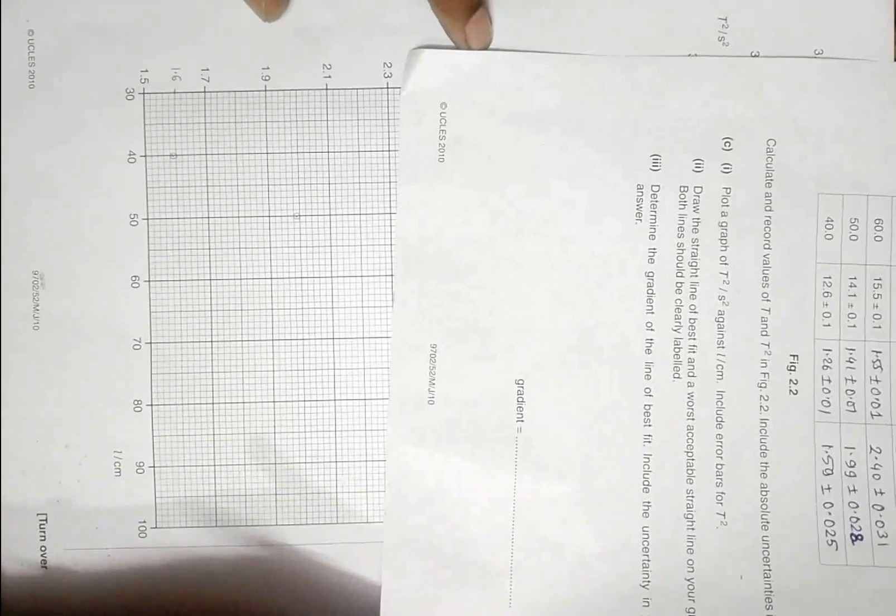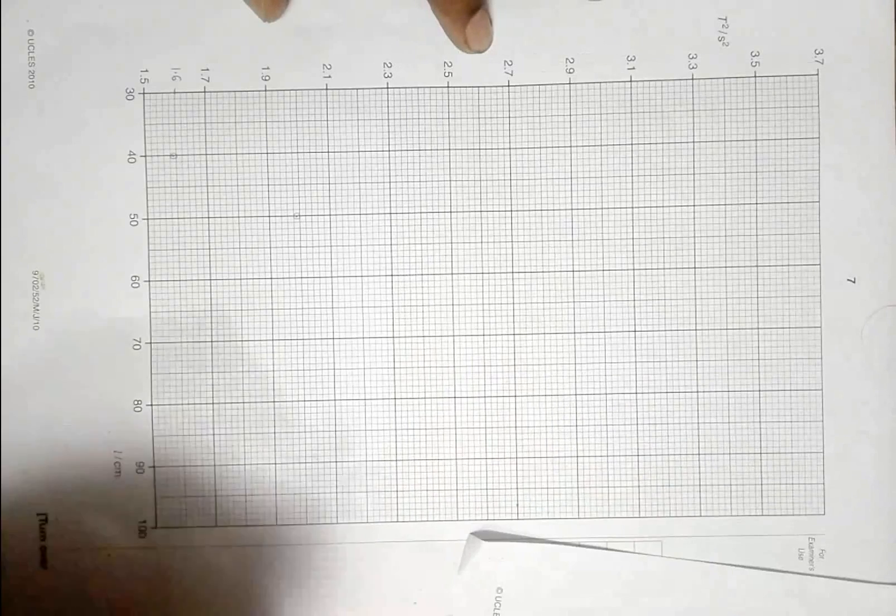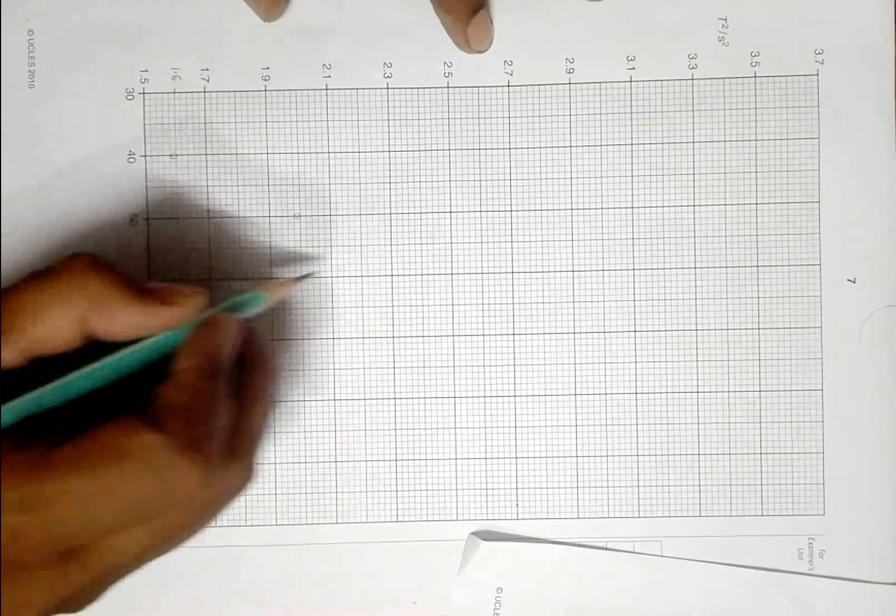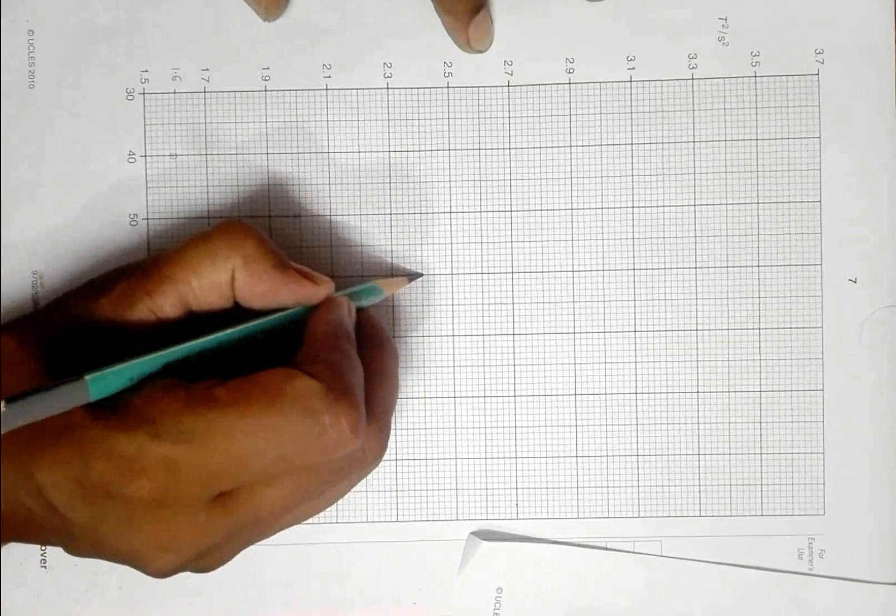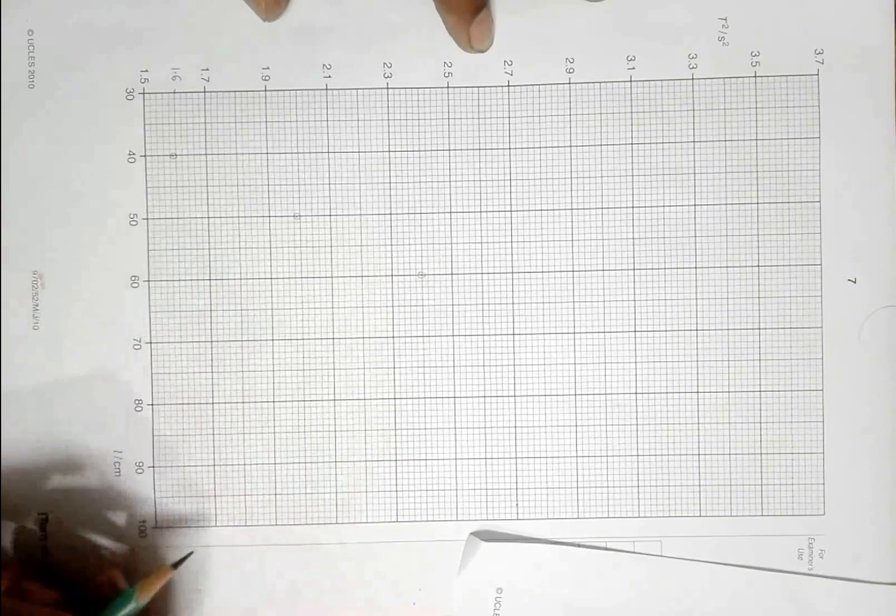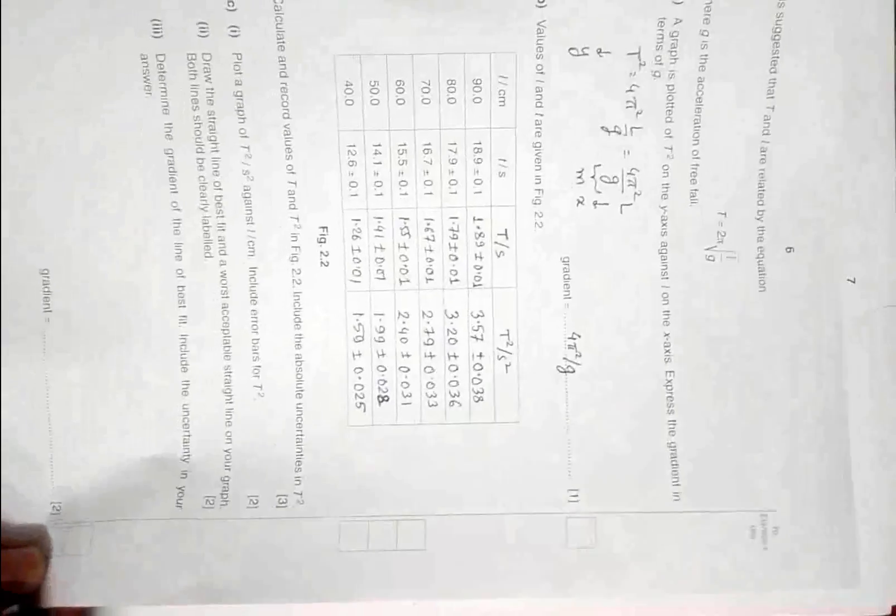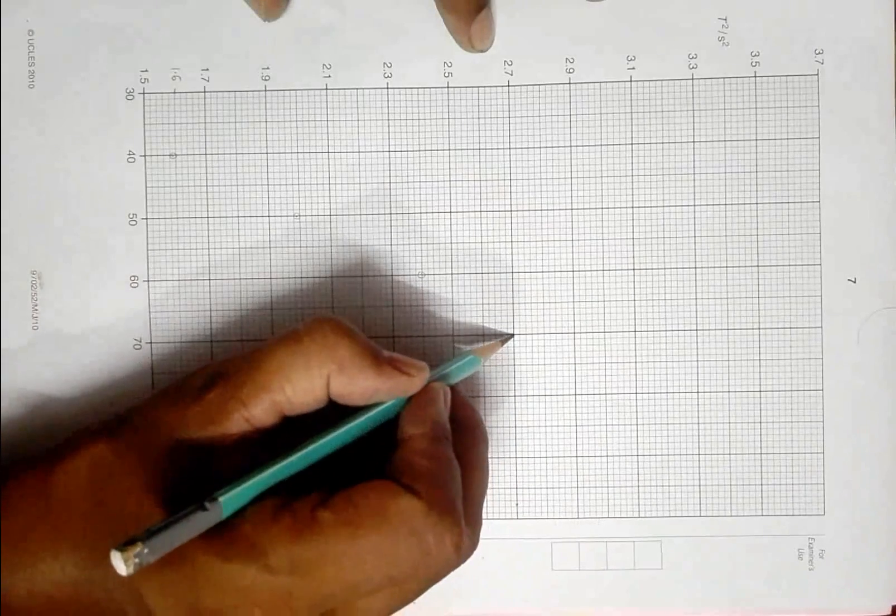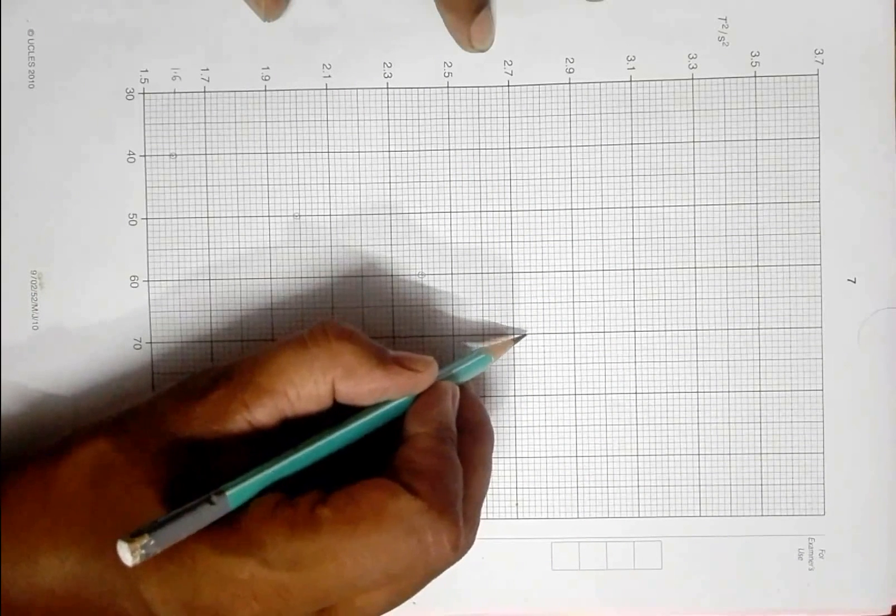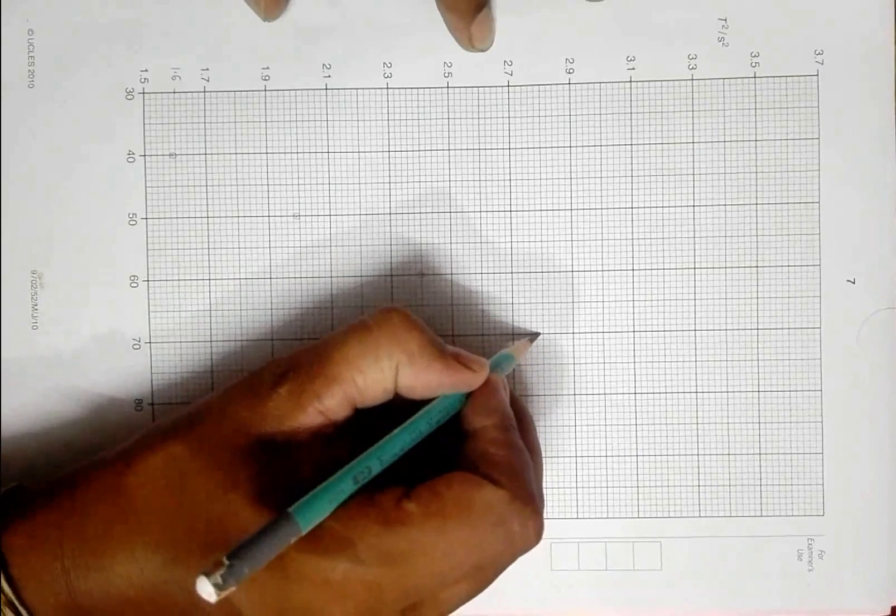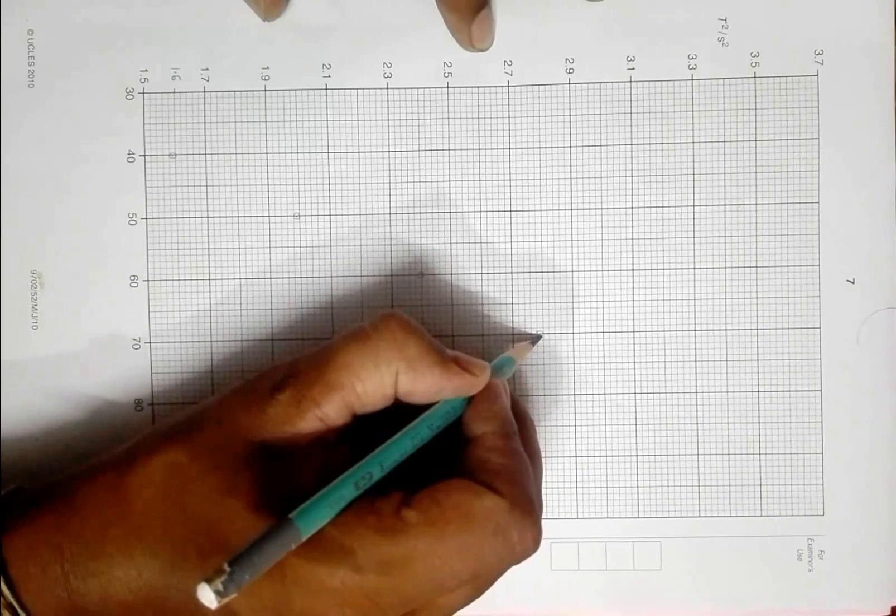The third point is 2.40 at 60 centimeters. At 60, it is 2.40, so this should be the point. Let me draw a small circle here. And at 70 centimeters I have 2.79. This is 72, 74, 76, 78, 79. The point should be here, small point and small circle.